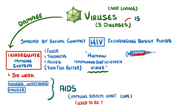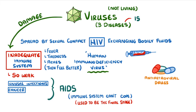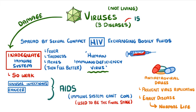This used to be the end of the story, as people would die of random infections or cancer. Now though, we have a group of medications called antiretroviral drugs, which prevent the viruses from replicating within our bodies. So as long as people have access to these medications early on in their disease, they can go on to live normal lives.